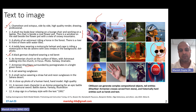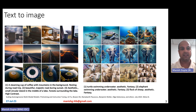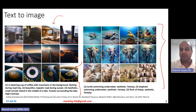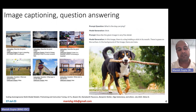The most popular example from this paper is 'a small cactus wearing a straw hat and neon sunglasses in the Sahara Desert.' You can come up with very creative imagery using these different kinds of prompts — a steaming cup of coffee with mountains in the background, or aesthetic images like a small circular island in the middle of a lake with a forest surrounding it, high contrast. Even imaginary images like 'elephant swimming underwater, aesthetic fantasy.' It's very interesting what you can generate using the Chameleon model.